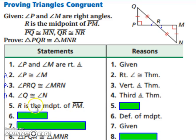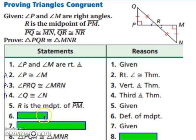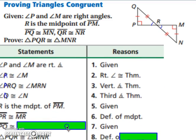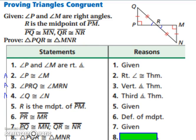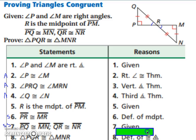R is the midpoint of PM — given to us — and we can use the definition of midpoint to state that PR and MR must be congruent. We can also use our last set of givens: PQ is congruent to MN, and QR is congruent to NR. That gives us two more sides. So we now have three sets of congruent angles and three sets of congruent sides, and therefore our triangles are congruent. Using the definition of congruent triangles, we state that the two triangles are congruent.